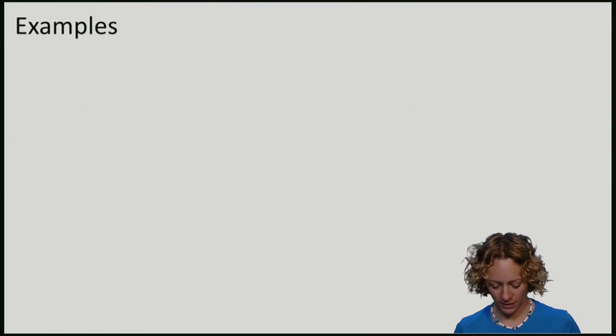Let's have a look at some examples of separable or entangled density matrices. The first example is this one. Here we can immediately identify what this probability distribution is. Say this is P0 and this is P1. And what the corresponding density matrices are. This would be rho 0A and this would be rho 0B.